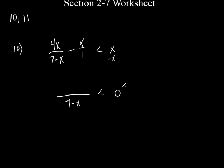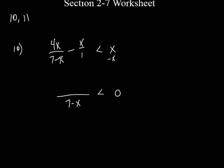That was my goal at first — to get that 0 on the right-hand side. But now I have to simplify this side. What did we do to 7 minus x to get to 7 minus x? We didn't do anything. So we don't do anything to the 4x — we basically multiplied by 1. So we do that to the top: 4x.